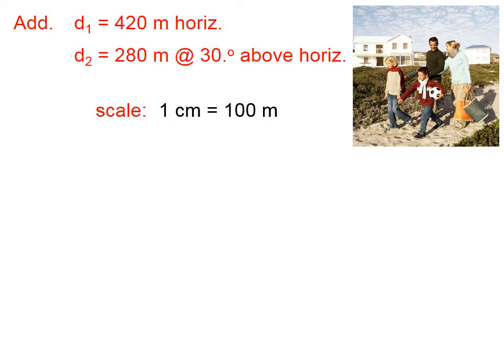Well, if we're going to draw this out graphically, we need to have a scale so that it fits on our paper. And so we're going to choose a scale of 1 centimeter is equal to 100 meters. So now we're going to draw the first vector 420 meters horizontally. That would be 4.2 centimeters horizontally, according to our scale. And this is not a line, it's a vector. So we need to give it a direction by putting an arrow tip on the one end.